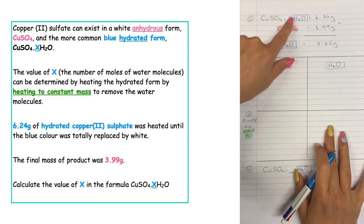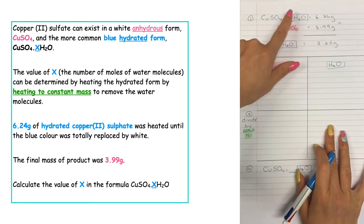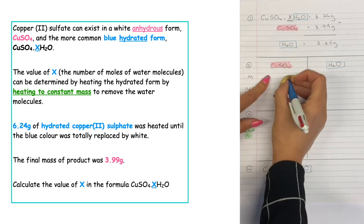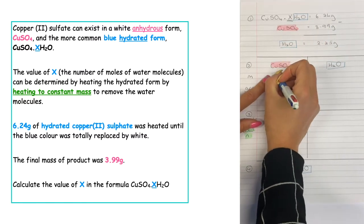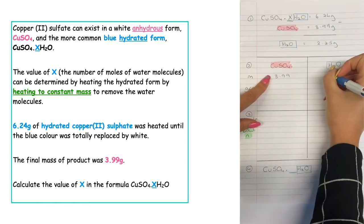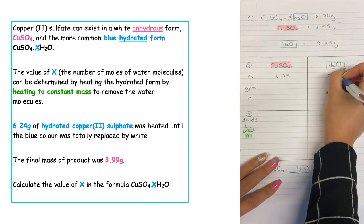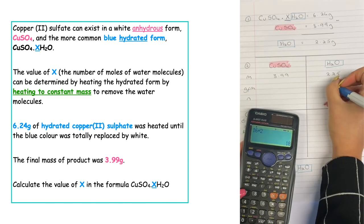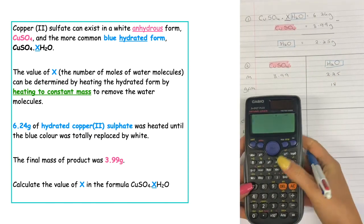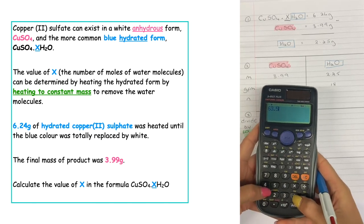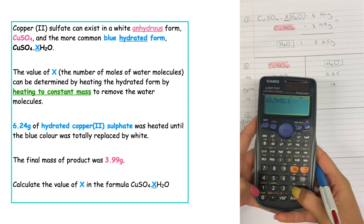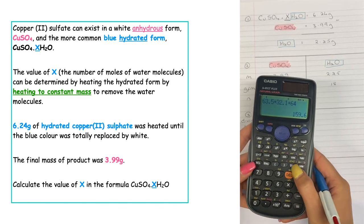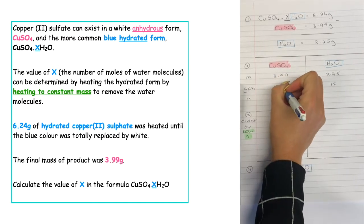Because we want to work out the number of moles of water that were attached, we need to calculate n. To do that we're going to use our mass triangle. The mass of the copper sulphate is 3.99 and the mass of the water is 2.25. The GFM of water is 16 plus 2 for our hydrogens, which is 18. The GFM of copper sulphate: copper is 63.5, plus 32.1 for sulphur, plus 4 times 16 for oxygen, giving a GFM of 159.6.